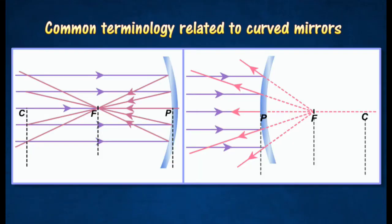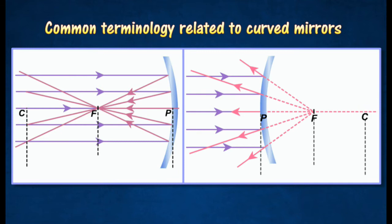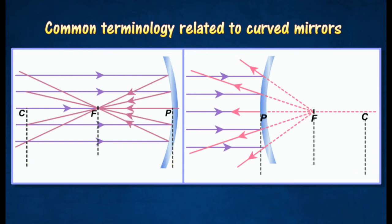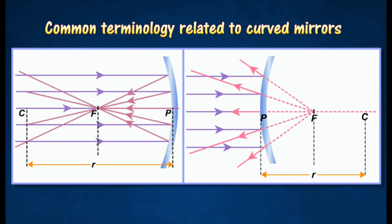Here are some common terminology related to curved mirrors. The center of curvature, C, of a curved mirror is the center of the sphere of which the mirror forms a part. The radius of curvature, R, is the radius of the sphere of which the mirror forms a part. The pole, P, of a curved mirror is the point at the center of the mirror.